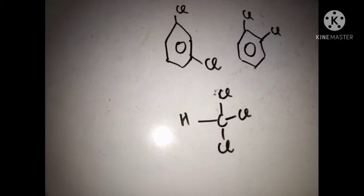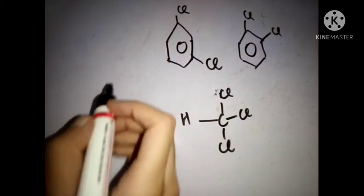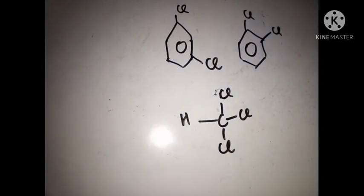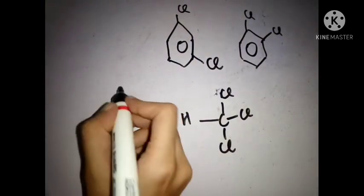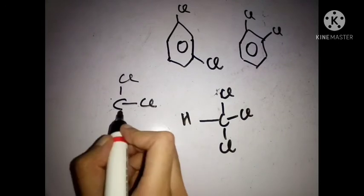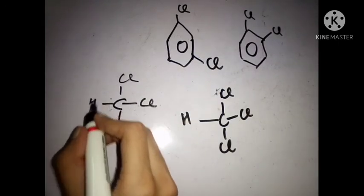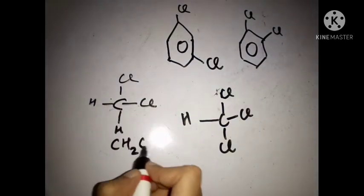Now we can replace more than one hydrogen with halogen. Like you can see on the board, there are two chlorine attached with the benzene, so it is 1,3-dichlorobenzene and second one is 1,2-dichlorobenzene. These are examples of haloarenes.